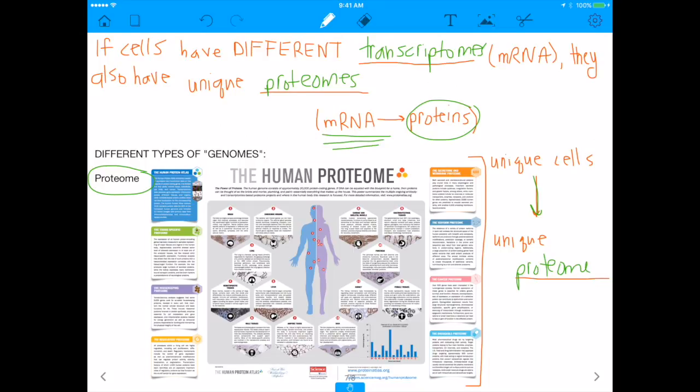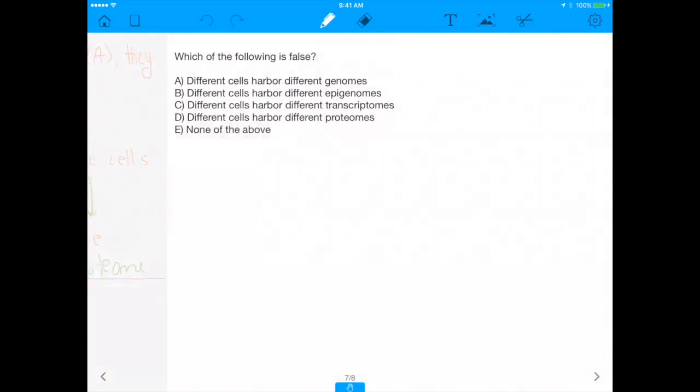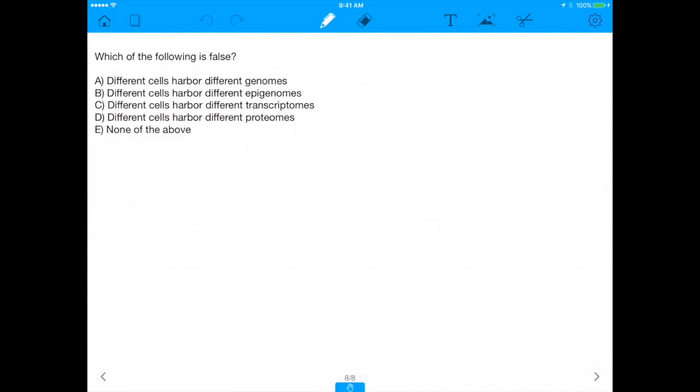And what that also means is that unique cells will have a unique proteome. So, at the end of the day, believe it or not, different cells do harbor different epigenomes. Different cells do harbor different transcriptomes. And different cells do harbor different proteomes. But believe it or not, at the end of the day, every single cell has the same genome. So, the part that's false here is A. Every single cell has the same genome, but the reason they differentiate into different things is because they have different epigenomes, transcriptomes, and proteomes. All right, hope you guys enjoyed the video. I'll see you guys in the next one. Bye-bye.